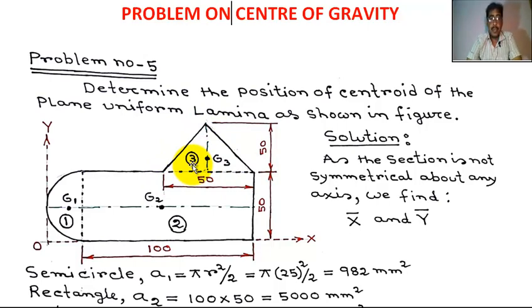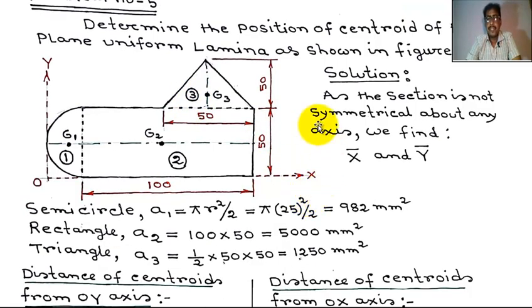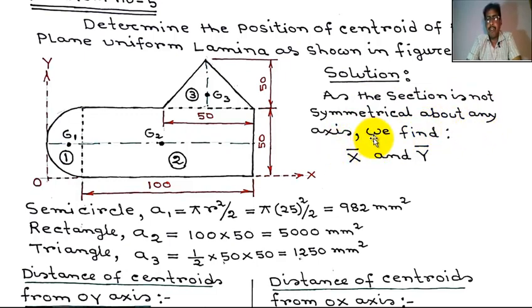Now we solve the problem. As the section is not symmetrical about any axis, we need to find both x̄ and ȳ.